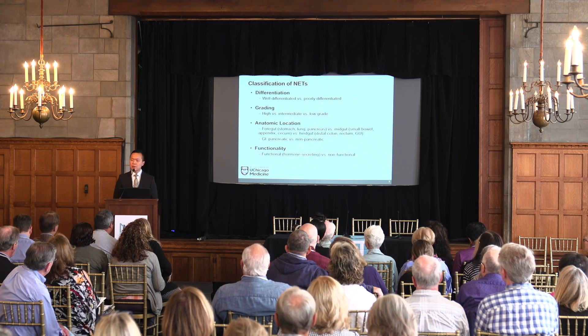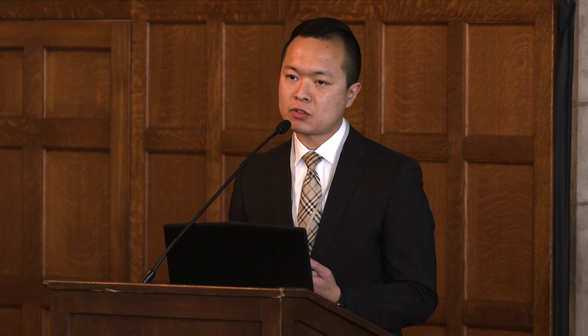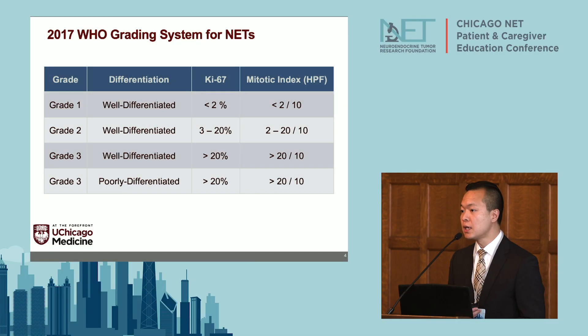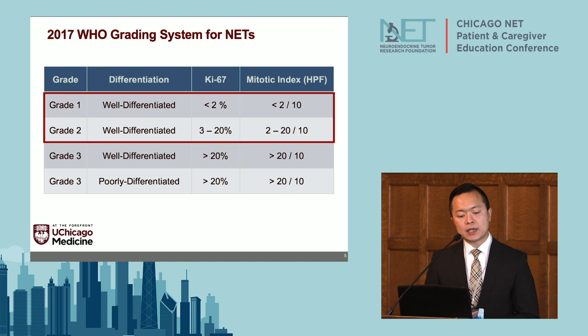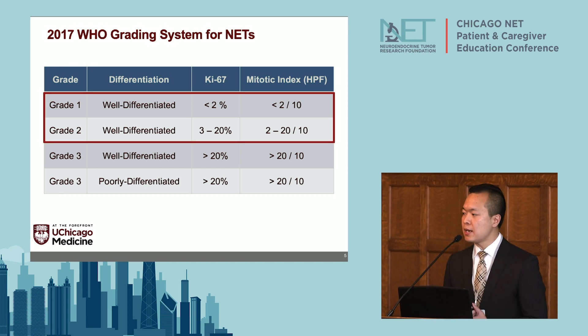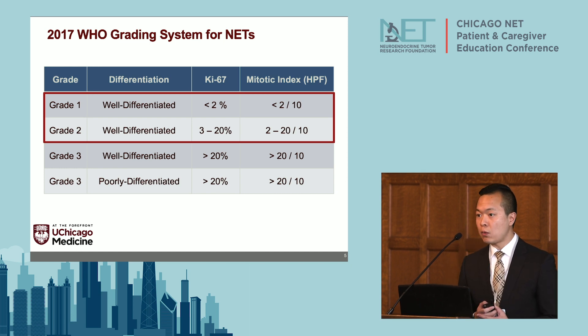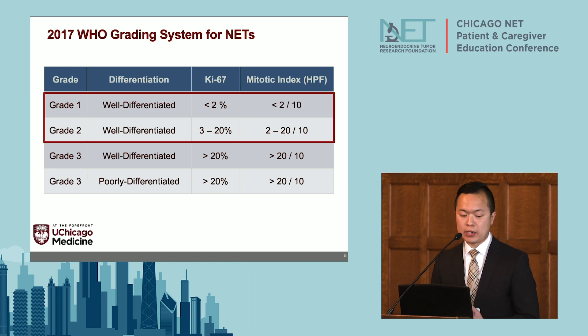When we think about neuroendocrine tumors, this is really a broad umbrella term for very heterogeneous groups of tumors. We describe them by differentiation, by grading, by their anatomic location, and by whether they're functional or non-functional. As Thor has mentioned, there is the WHO classification scheme for neuroendocrine tumors based on tumor grade and differentiation. Today we're going to focus mainly on systemic therapies for grade one and grade two well-differentiated neuroendocrine tumors.